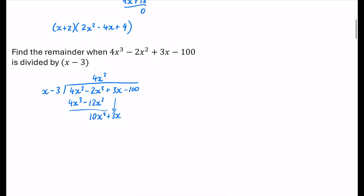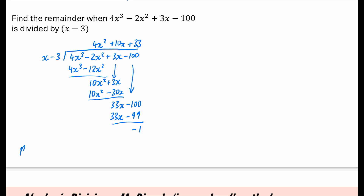Now 10x² divided by x is 10x. Multiply through to get 10x² minus 30x. Subtract: 3 minus (minus 30) is 33x. Pull down the minus 100. Then 33x divided by x is 33. Multiply (x minus 3) by 33 to get 33x minus 99. Subtract: minus 100 minus (minus 99) is minus 100 plus 99, which is minus 1. So the remainder is minus 1.